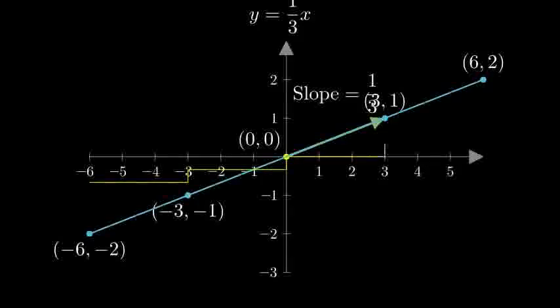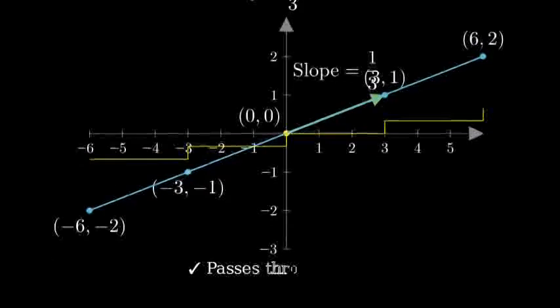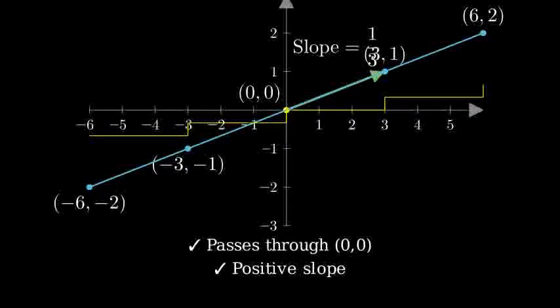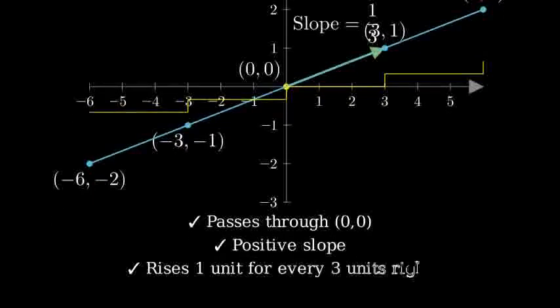To verify our graph, we can check that the line passes through the origin, our y-intercept, the line has a positive slope moving up as we go right, and for every three units we move horizontally, we move one unit vertically, giving us our slope of one-third.